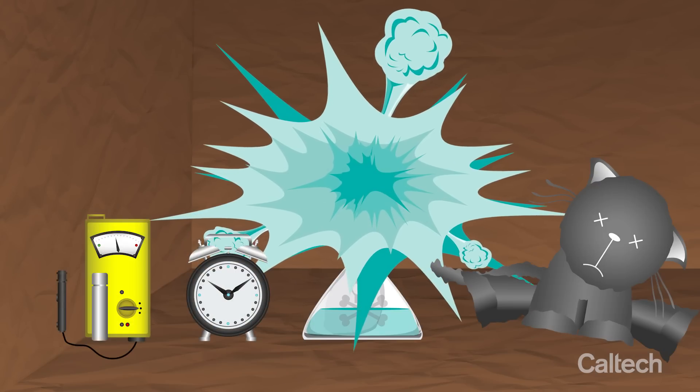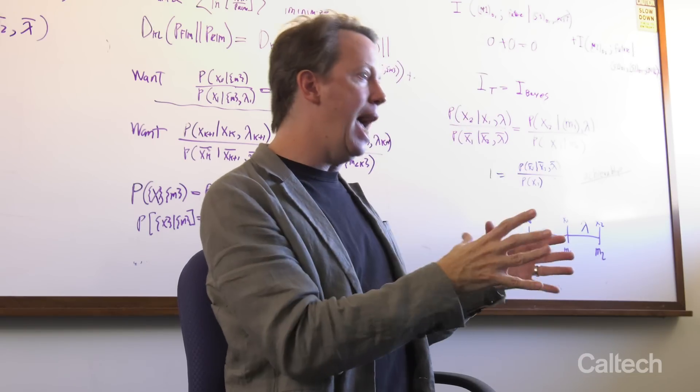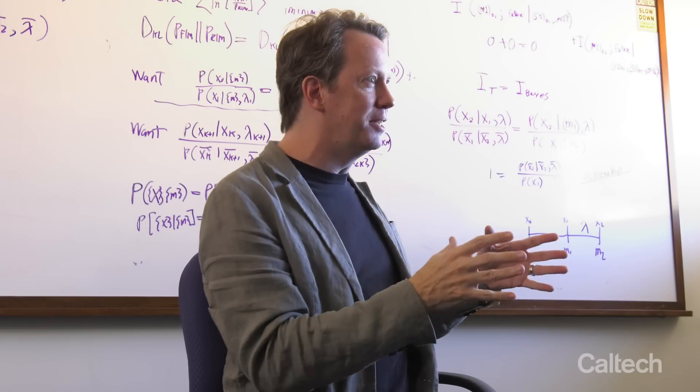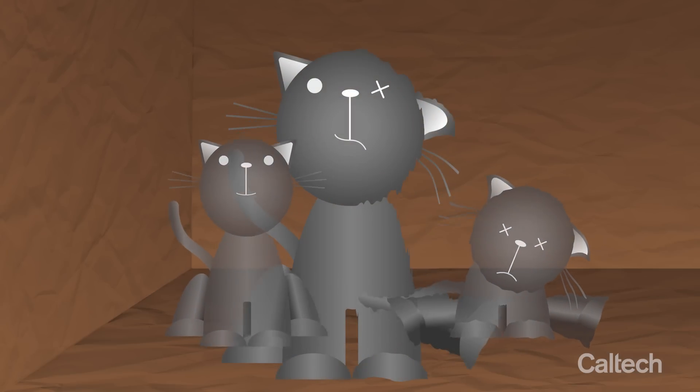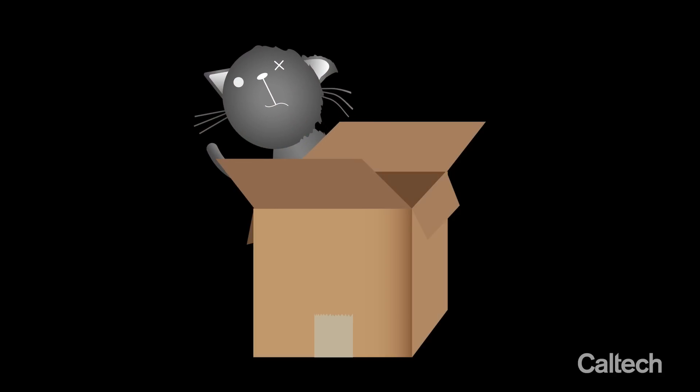And Schrodinger points out if you take quantum mechanics seriously, it says that after this, the cat is in a superposition of half alive and half dead. The point of this is supposed to be, no one really thinks that real cats are in superpositions of alive or dead, but that's what quantum mechanics seems to say.